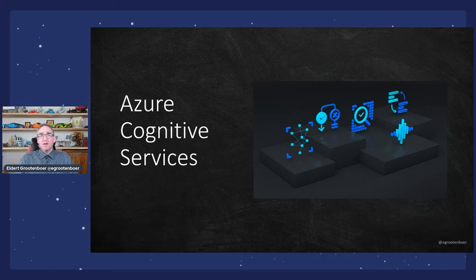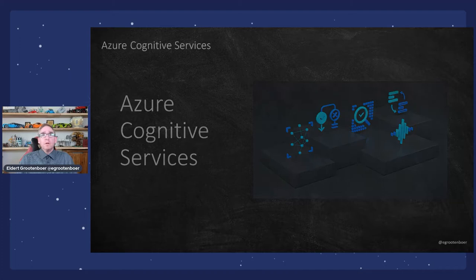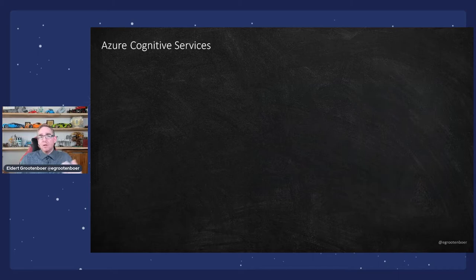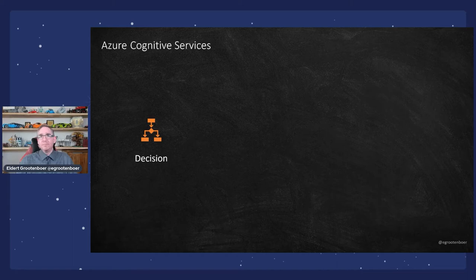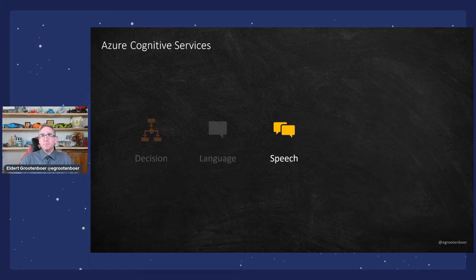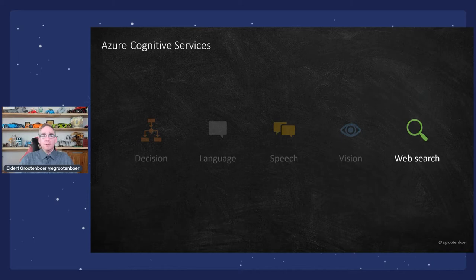The Azure Cognitive Services are all about implementing those cognitive services on the Azure platform. We can distinguish a couple of different categories. We have decision making — about logical decision making. We have language, which is all about text and understanding sentiment. We have speech, which is about spoken words. Vision is about what we see, video, and images. And web search is basically all those different Bing services.